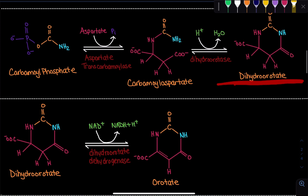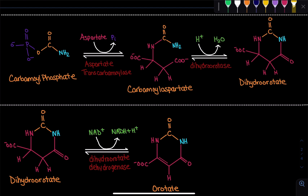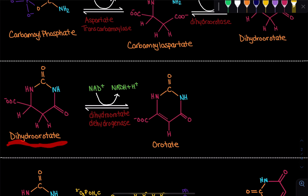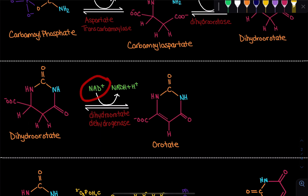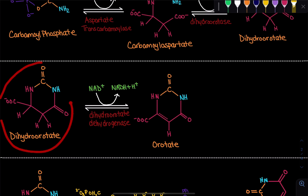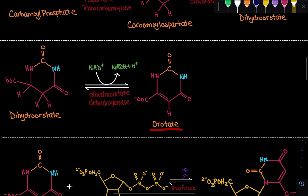We first synthesize orotate before getting to uracil. We have dihydroorotate, but we want orotate. The difference between these two molecules is the conjugation — nitrogenous bases have to be flat and conjugated in order to stack properly in DNA and RNA, which is exactly why we want that conjugation. We lose two hydrogens via the enzyme dihydroorotate dehydrogenase. This is an oxidation-reduction reaction where the molecule gets oxidized and NAD+ gets reduced, releasing NADH and H+, and we get orotate with conjugation.